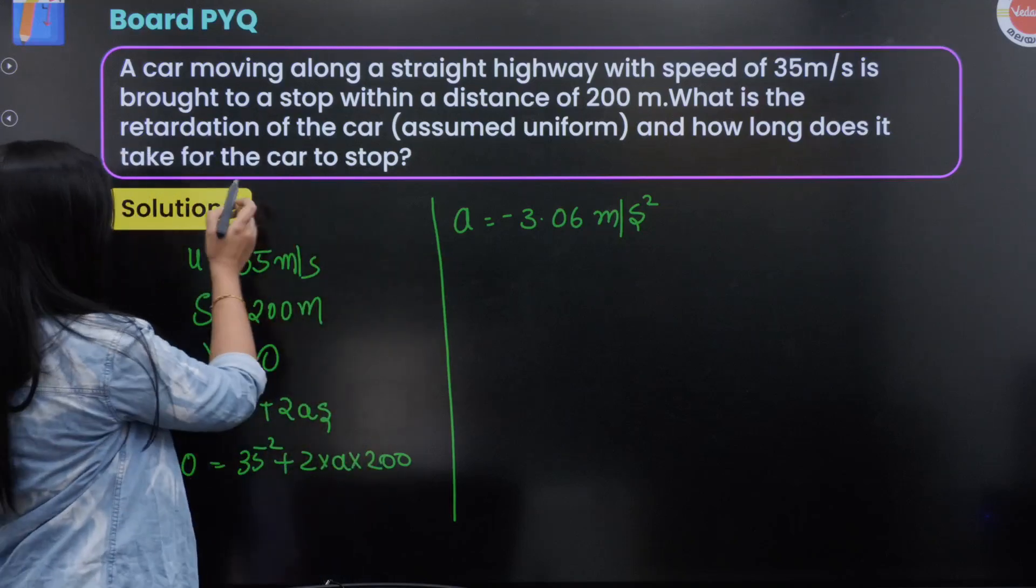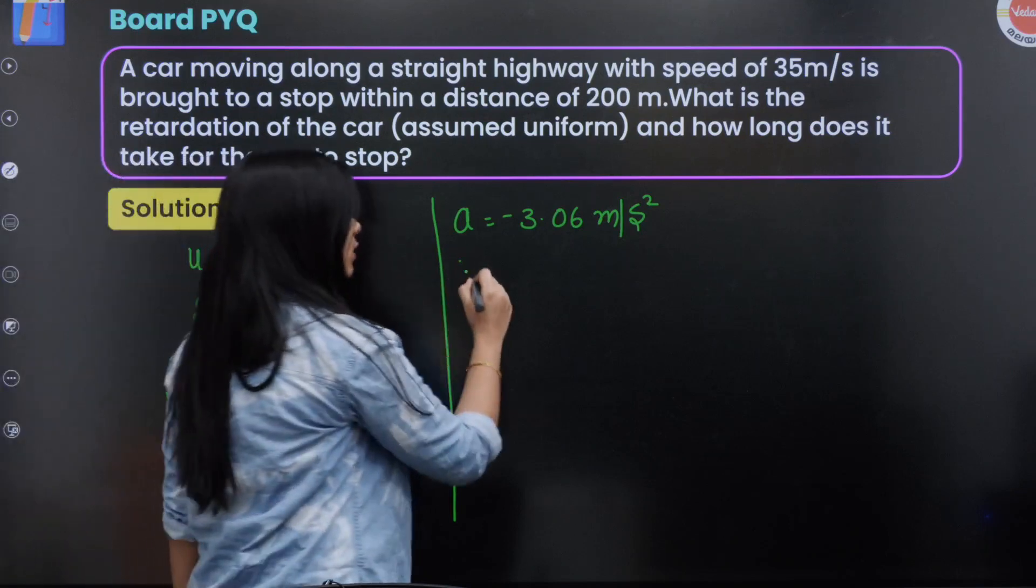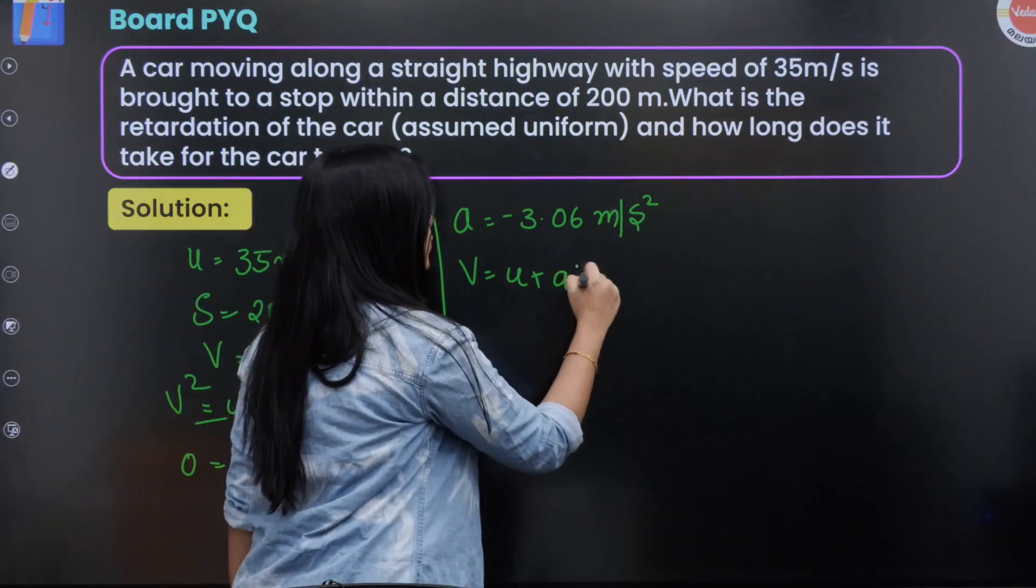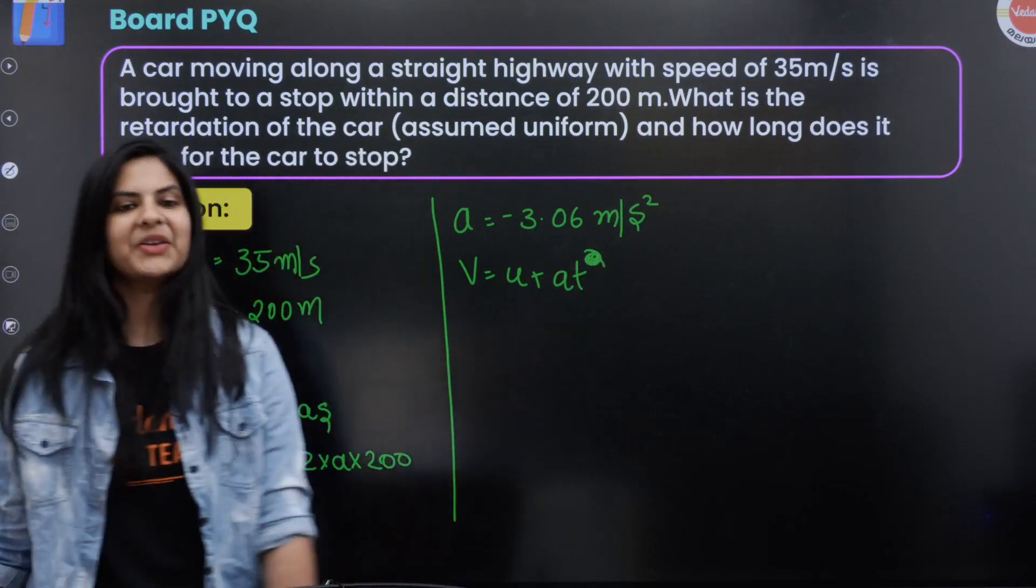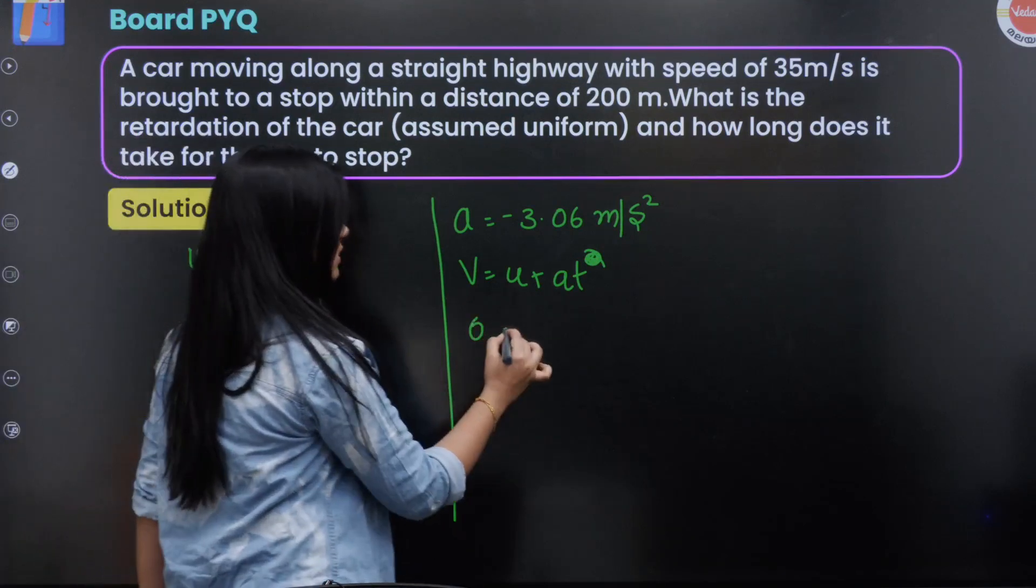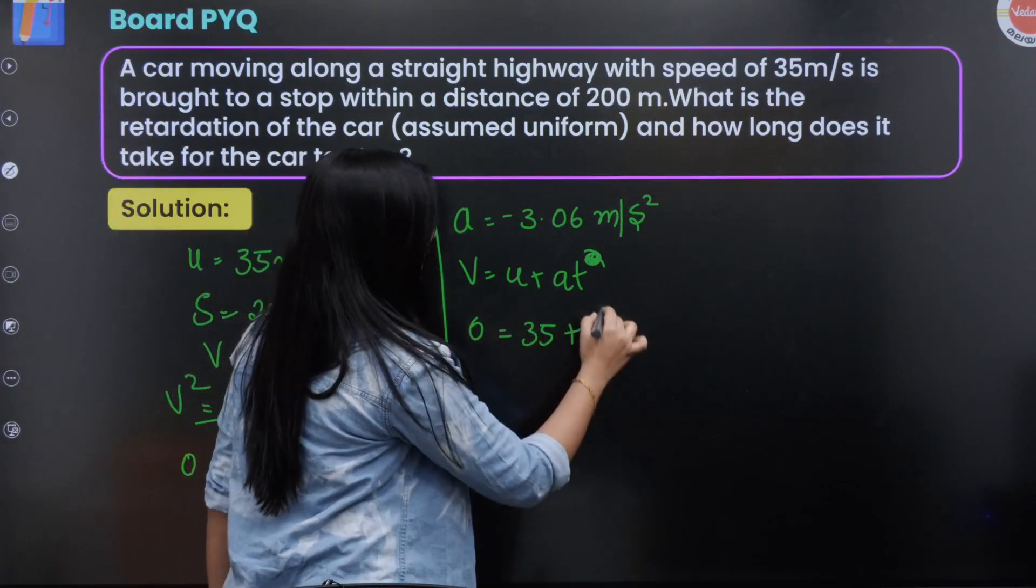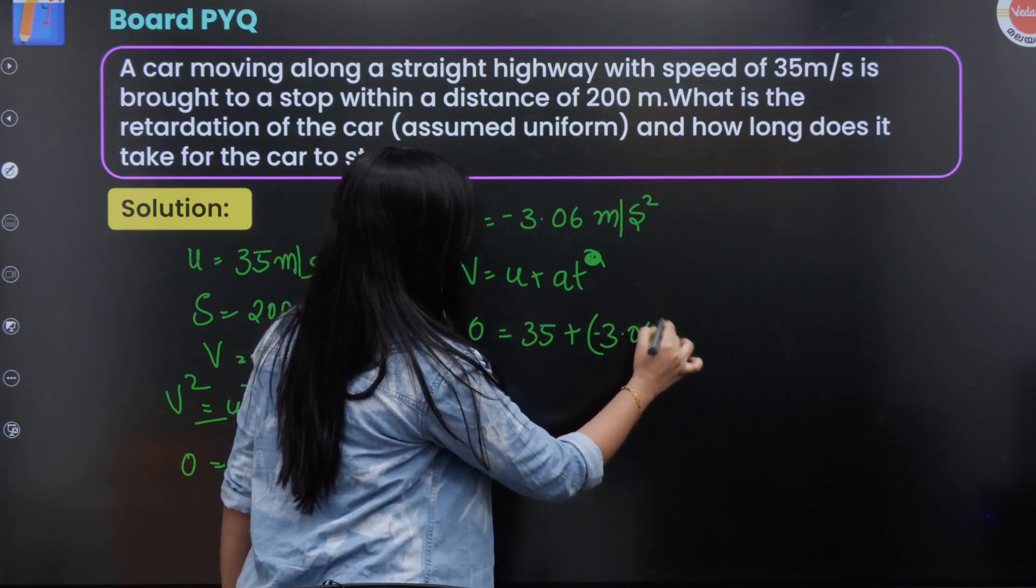Now to find the time, we use the equation v = u + at. Substituting all the values: 0 = 35 + (-3.06) × t.